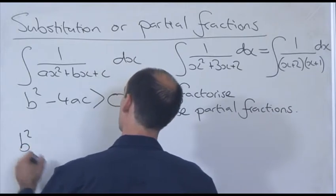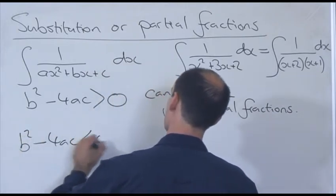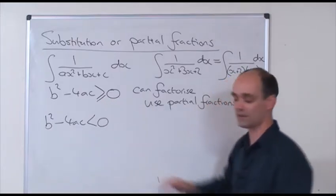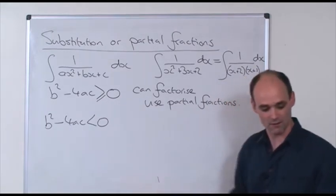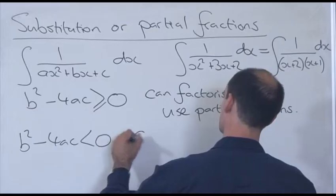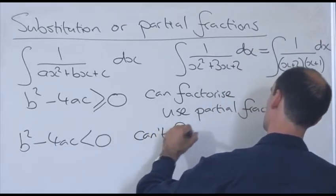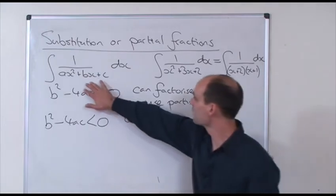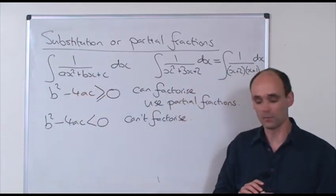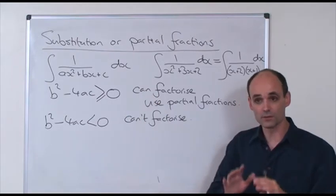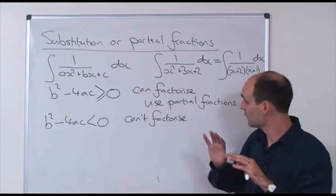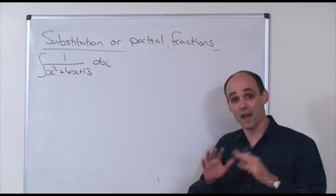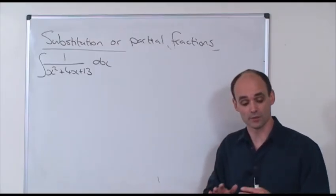But if b squared minus 4ac is less than or equal to 0 — with equal to 0 I can still factorise it — but if it's strictly less than 0, then I can't factorise it. So what do I do in that case? I use the method of completing the square in that quadratic, and then I'll use a tangent substitution to do the integral. Here's an example where I think I'm going to have to complete the square and use a tangent substitution.